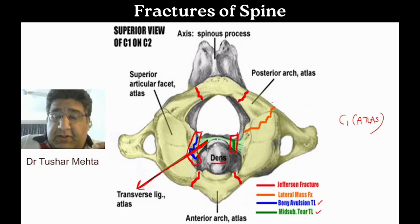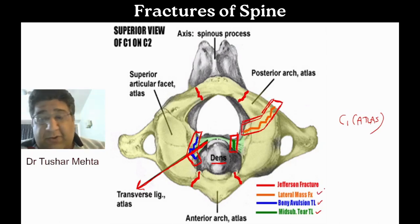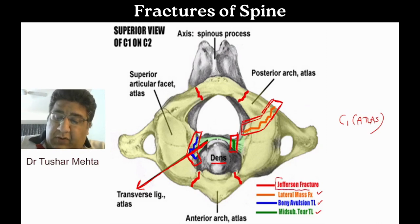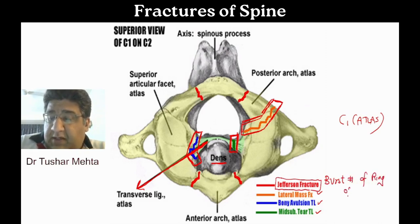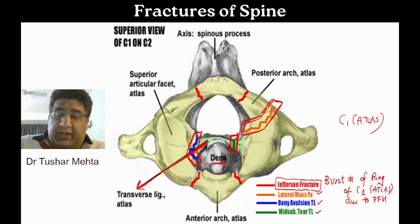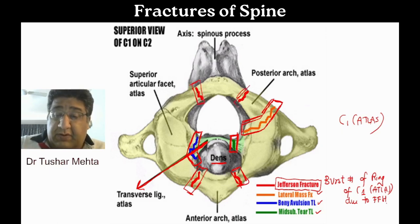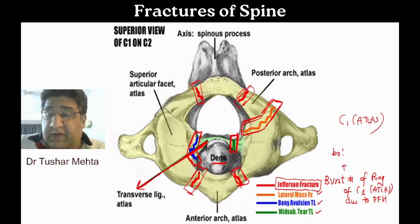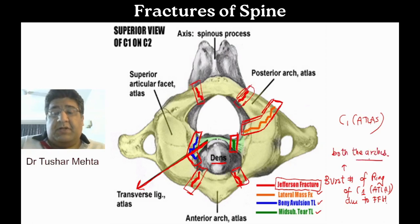Now I'll show you the lateral mass fracture. But the key point to discuss is Jefferson's fracture, which is a burst fracture of the ring of C1 — the atlas — usually due to a fall from height. Most patients have no neurological deficits since the cord is narrow and the ring is wide. It involves fracture of both the anterior and posterior arch together.